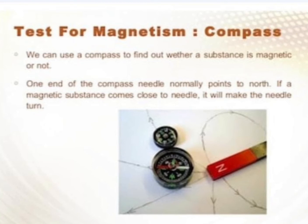Magnetism का test क्या है? Compass. We can use a compass to find out whether a substance is magnetic or not. One end of the compass needle normally points to the north. If the magnetic substance comes close to the needle, it will make the needle turn. Magnetic compass generally North की तरफ point out करती है।